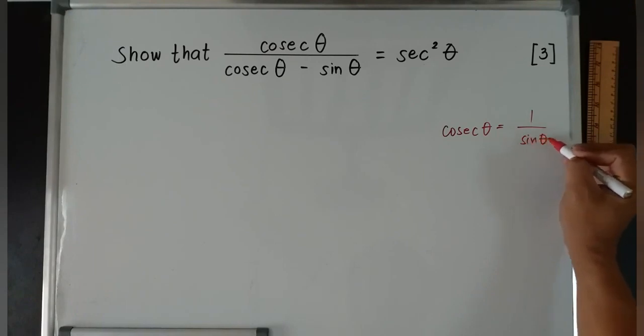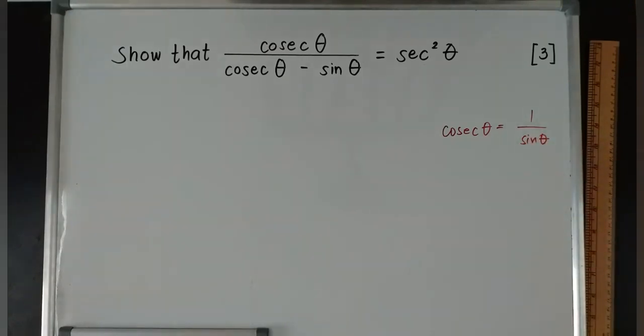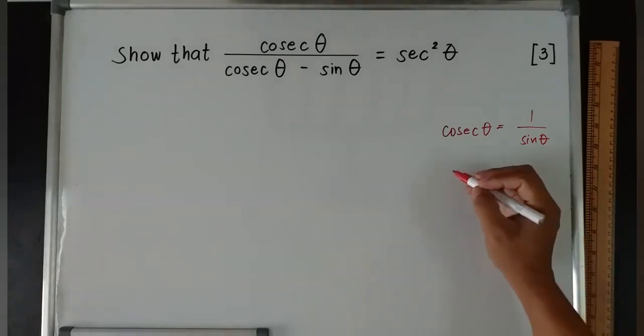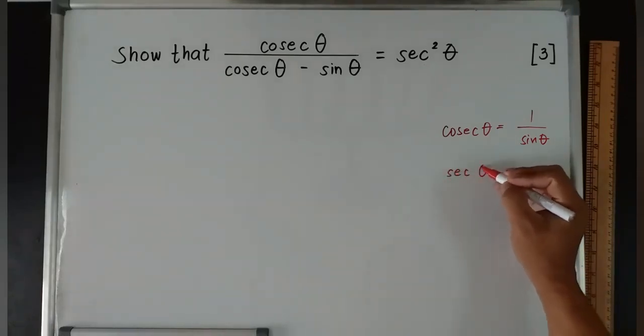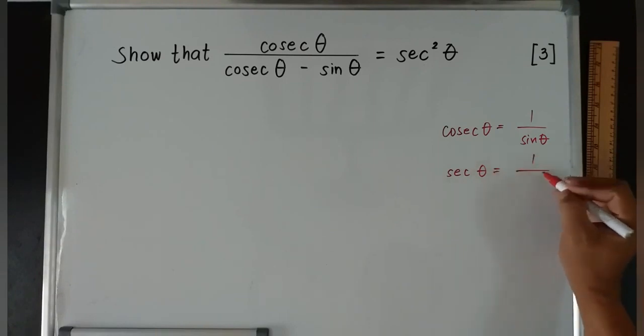This is one of your reciprocal identities. Cosecant θ is equivalent to 1/sin θ. And remember that secant θ is equivalent to 1/cos θ.